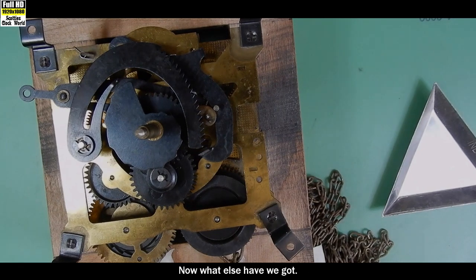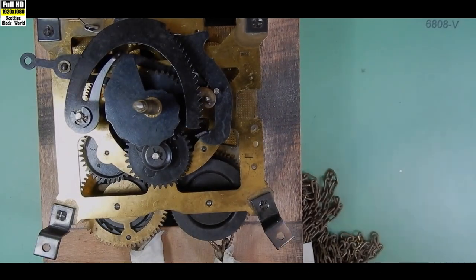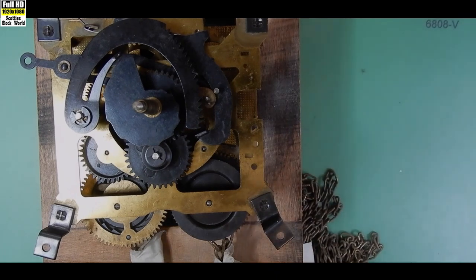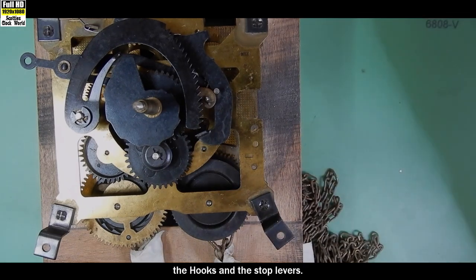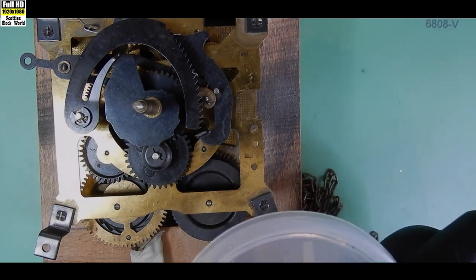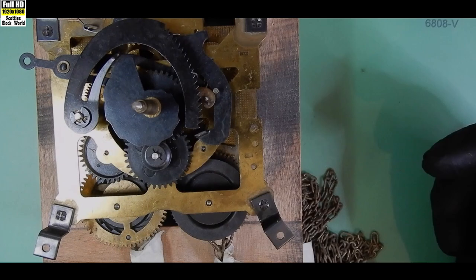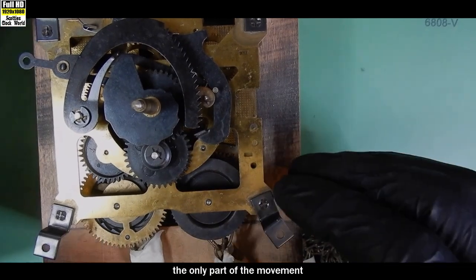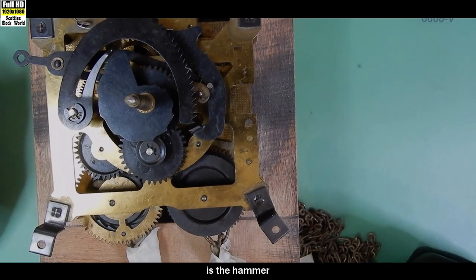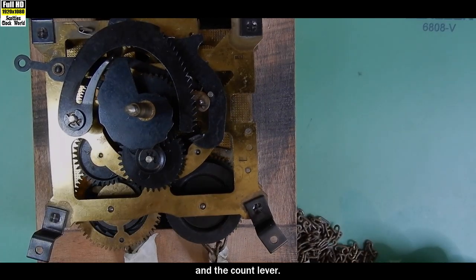Now what else have we got? There are the hands, the hooks and the stop levers, there are the ferrules. So it looks like the only part of the movement still left is the hammer and the count lever.